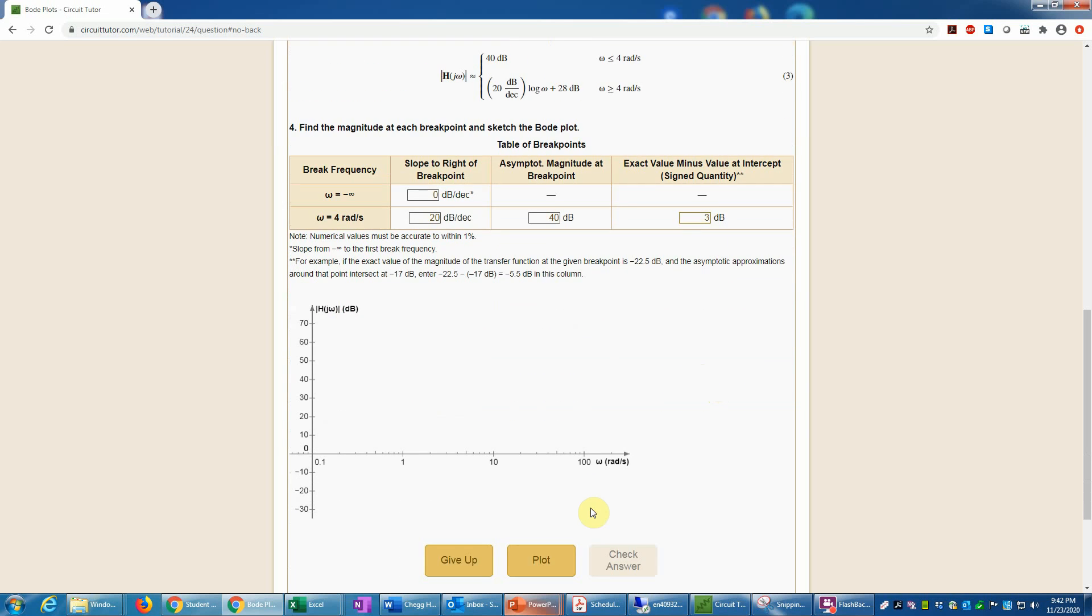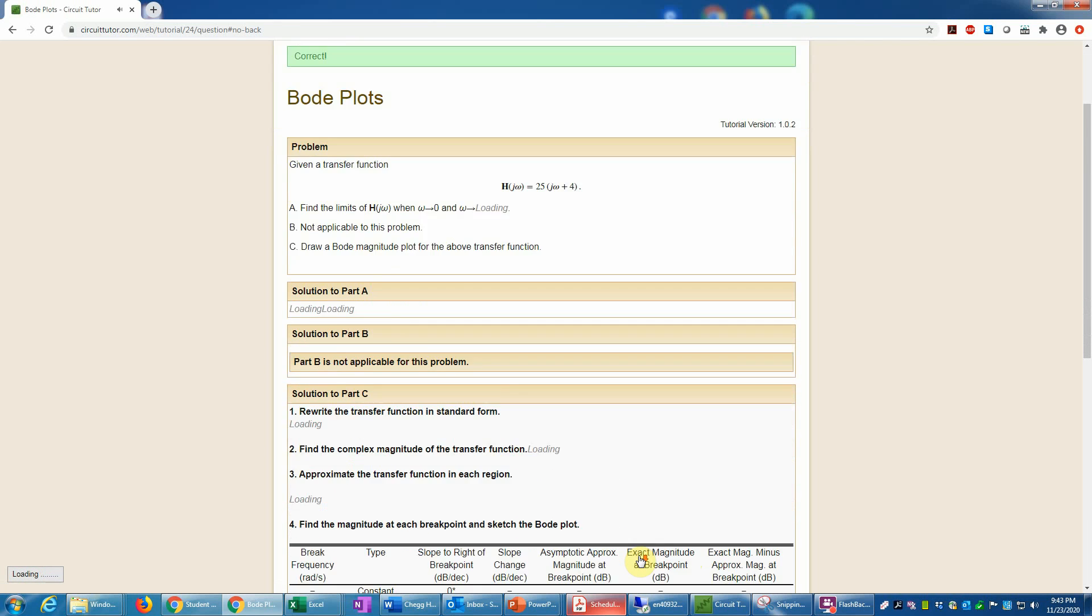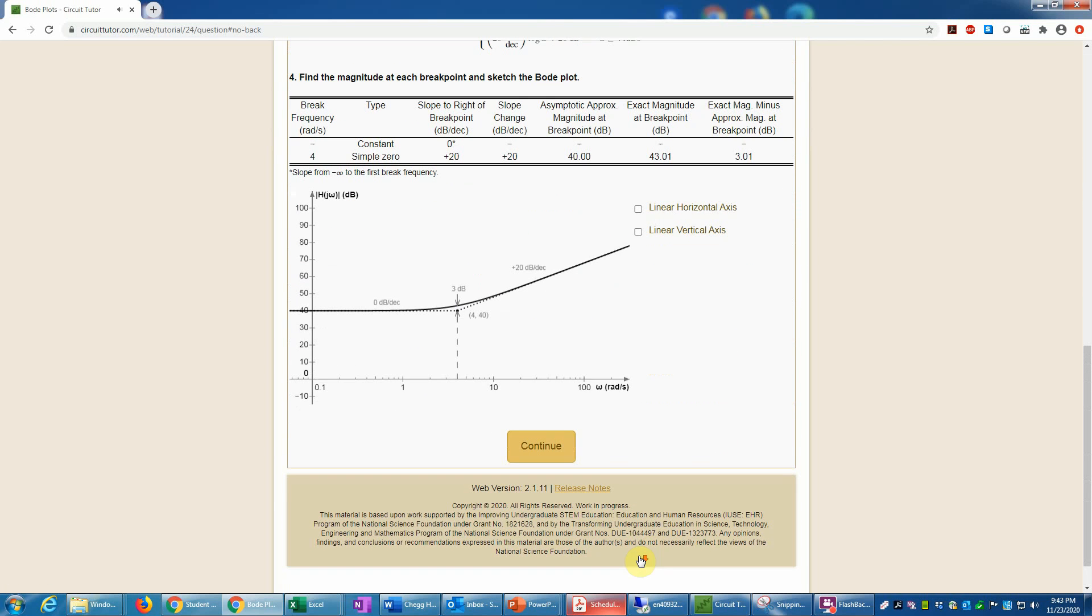That should be fine. Now we'll plot, having filled in the table. We click the plot button because it won't let us check the answer until we've plotted it. There's the plot, basically of what we just entered, putting straight lines in there for that. Now we can check it. That is correct. Exactly, I guess, was 3.01 dB, but 3 is certainly close enough for that. In fact, that doesn't have to be accurate to 1%. You can use the approximate formulas, and that will accept that.